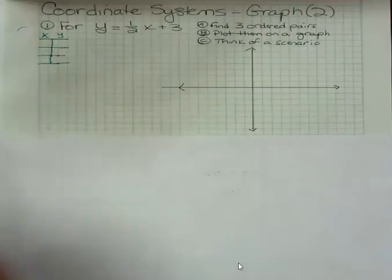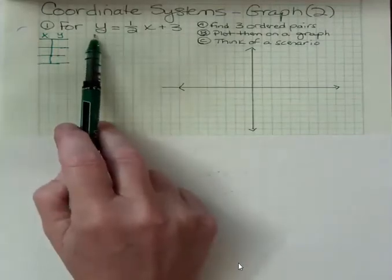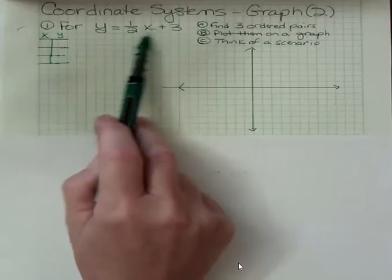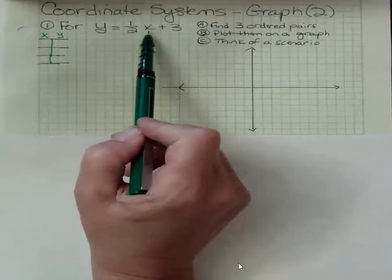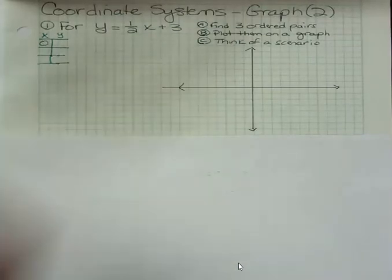Whenever my equation is in this format with Y by itself, I am going to pick three values for X because it's easier for me to plug in for X and then just simplify this side. The easiest one of all is always zero. When X is zero, that makes that term drop out.